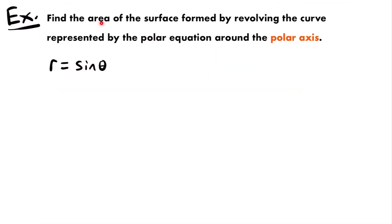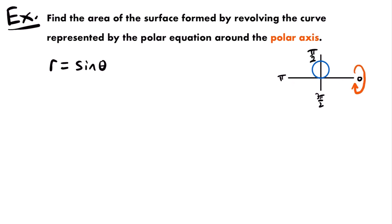Our first example: find the area of the surface formed by revolving the polar equation r = sin θ around the polar axis. The graph of r = sin θ is a circle that rests above the polar axis. We are revolving this entire circle around the polar axis, which is the equivalent of the x-axis in the rectangular coordinate system.